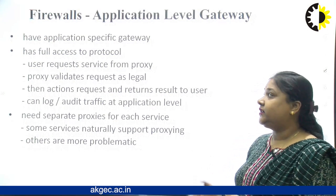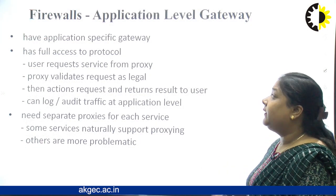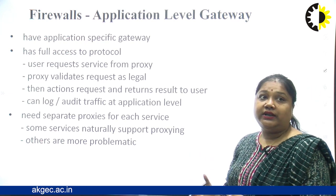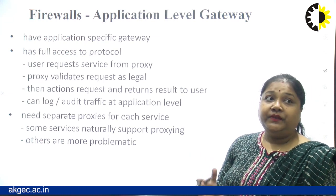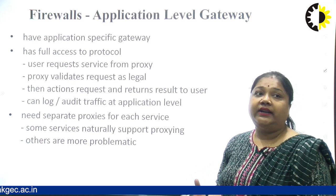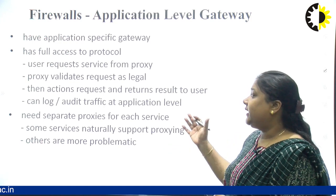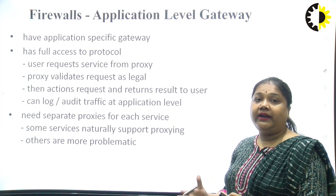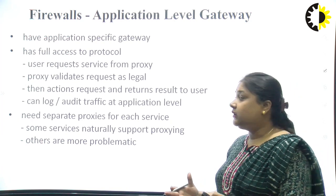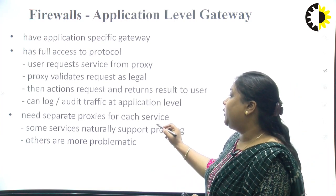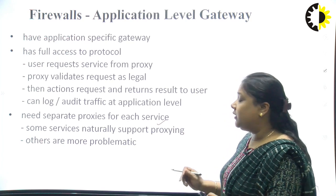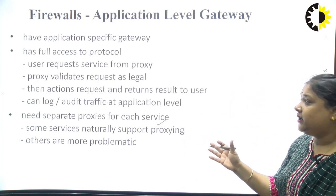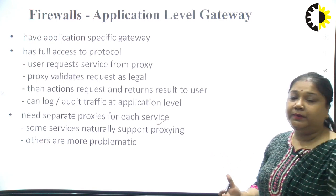The application level gateway has full access to the protocol. User requests come to a proxy, which validates the request as legal, then executes the request and returns the result to the user. It can log and audit traffic at the application level. It needs separate proxies for each service — for example, some services naturally support proxies while others are more problematic.